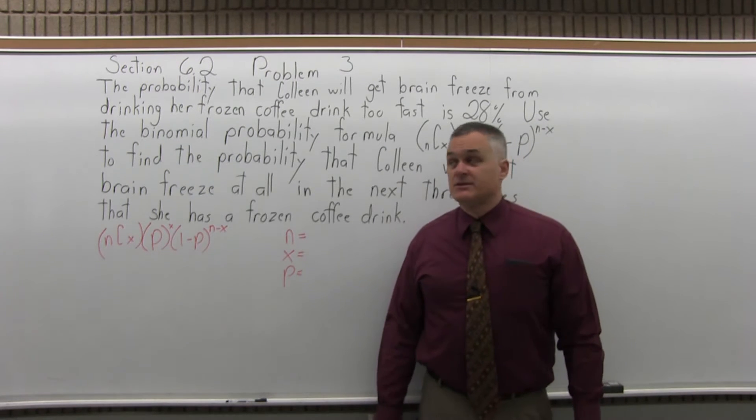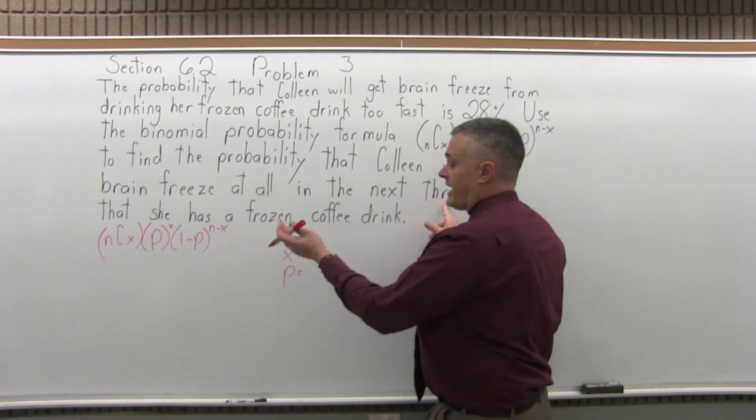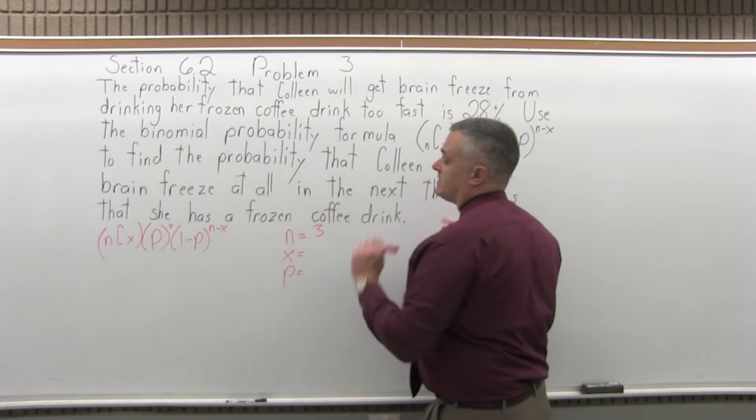So n is the number of trials. In this problem, n is three because it says the next three times, so three trials for the experiment.